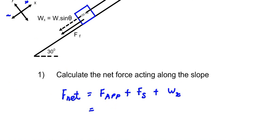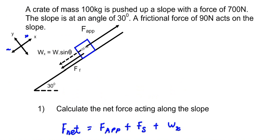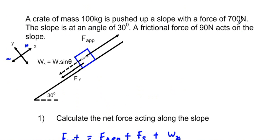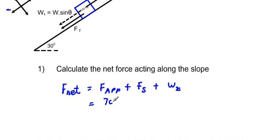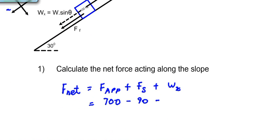Our applied force is 700 newtons up the slope, which is positive. The frictional force opposes motion so it acts in the negative direction: minus 90 newtons. The x-component of weight also acts in the opposite direction and must also be subtracted, giving minus w·sinθ.